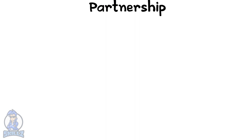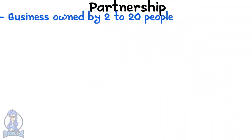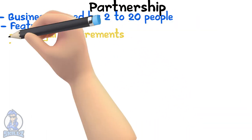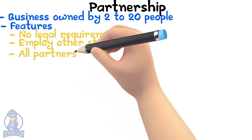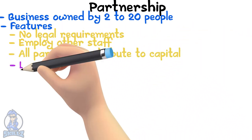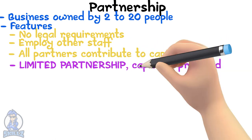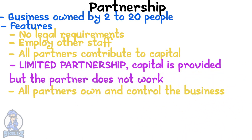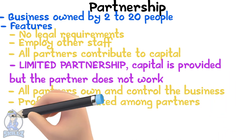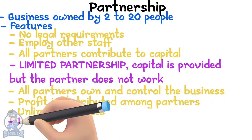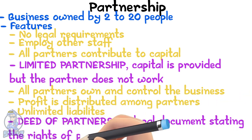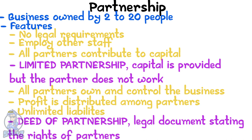Partnerships. A partnership is when a business is owned by 2 to 20 people. Some features of partnerships are: no legal requirements, they can employ other staff, both partners contribute to capital, there could be a limited partnership where capital is provided by a partner but they do not work in the business, ownership and control is by the partners, profit is distributed among partners, unlimited liabilities, and a deed of partnership is formed. A deed of partnership is a legal document that states the rights of the partners — how much capital each partner gave, how profits are shared, and how to terminate a partnership.